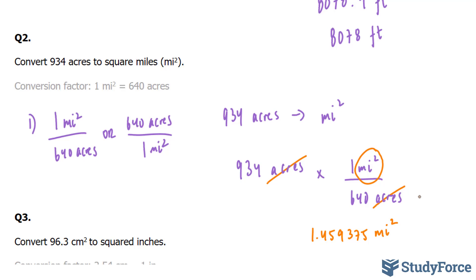1.459375 miles squared. Now, if you are asked to keep in mind significant digits, remember that this one has three. And since that has three significant digits, so should our answer. And our answer would end up becoming 1.46 miles, because everything after the 5 would be discarded. And since this 9 is greater than 5, this number would go up by 1, leaving you with 1.46.